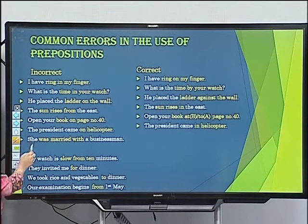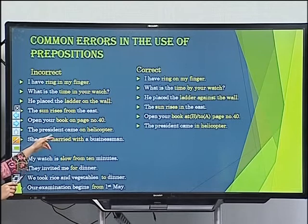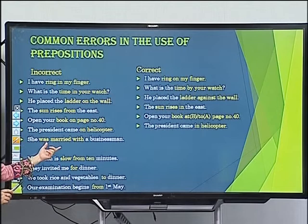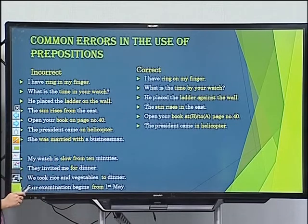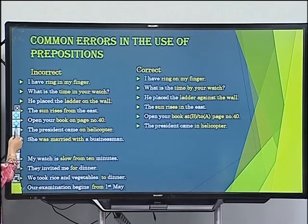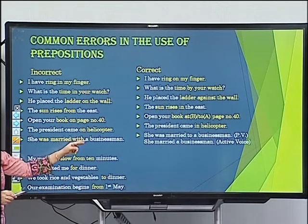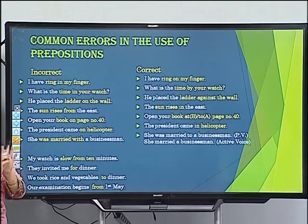Error: 'She was married with a businessman.' Incorrect. Correct: 'She was married to a businessman.' In active voice: 'she married a businessman.' In passive voice: 'she was married to a businessman.' Never use 'married with.'